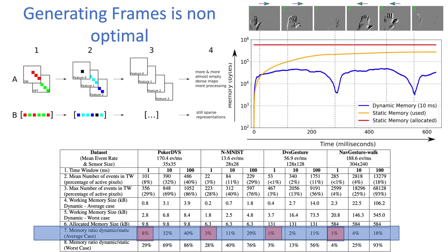Another nice example: a hand waving from left to right, stopping, then going the other way around. When you count the events per time bin, you are really following the dynamics of that hand. It's quite interesting to see that if you do frames, it's hard to really get that dynamics and the memory allocation that would follow the dynamics of the scene.